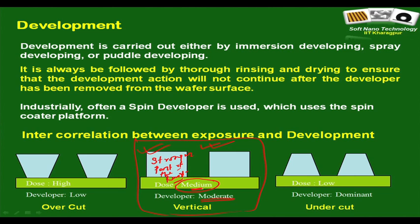The optimum case is optimally developed and optimally exposed. High exposure with low development can produce over-cut structures — there is a methodology called lift-off where this type of structure is desirable. For some applications you may want a trapezoidal undercut structure: you do low exposure combined with stronger development to get the undercut structure. These are details you can tailor, but ideally from the standard photolithography standpoint, a vertical profile is what you want.